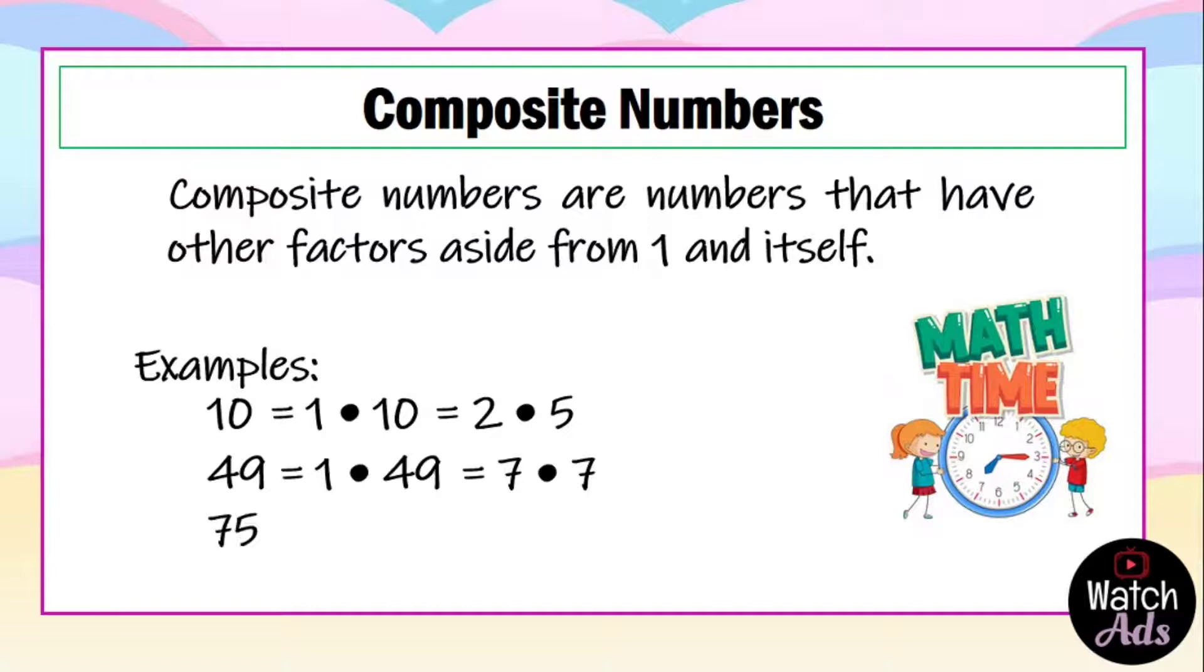Another example of a composite number is 75. 75 is a composite number because 75 has more than two factors. In fact, the factors of 75 are 1, 3, 5, 15, 25, and 75.